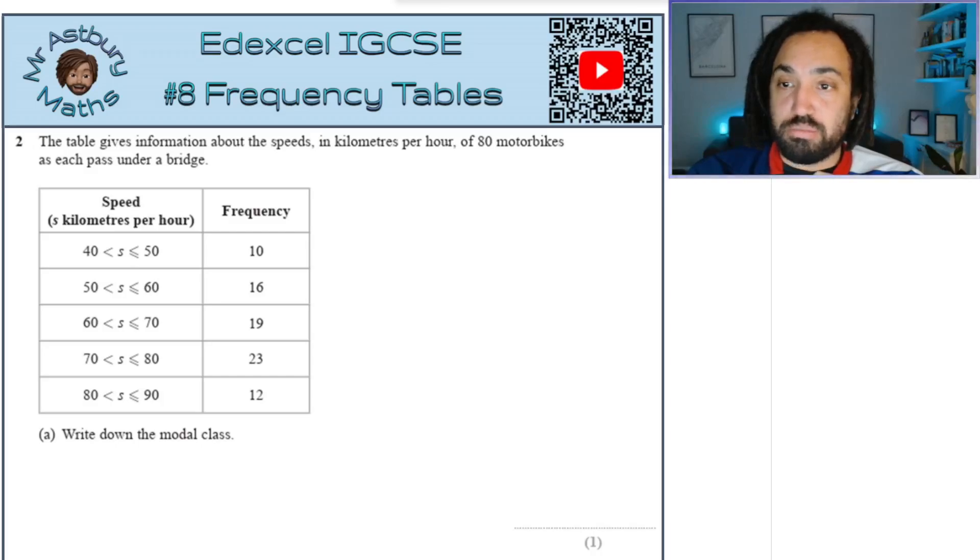Question: what's important here is that there are 80 motorbikes and we've got the table there. It says write down the modal class, the most frequent class. That happens to be the one with the biggest frequency, which is this one right there, 70 to 80.